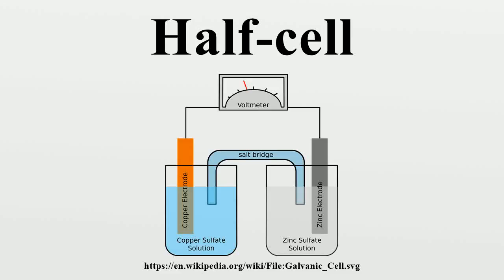A half-cell is a structure that contains a conductive electrode and a surrounding conductive electrolyte separated by a naturally-occurring Helmholtz double-layer.